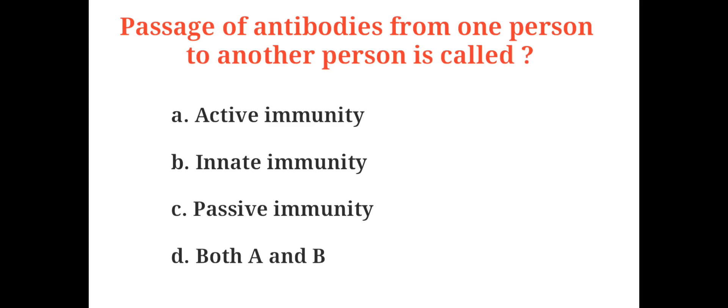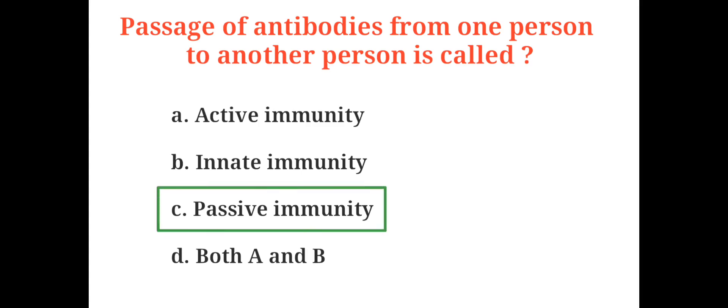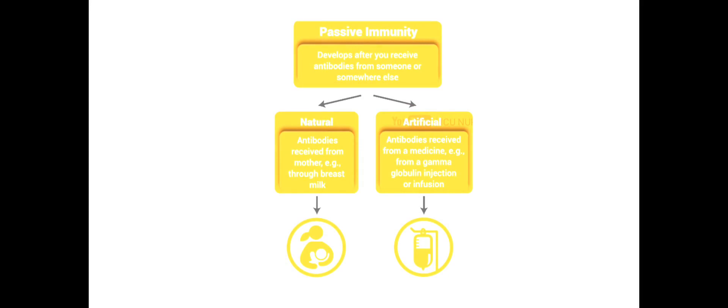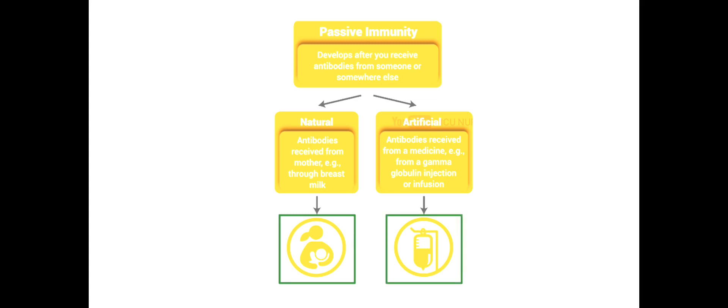Passage of antibodies from one person to another person is called A. Active immunity, B. Innate immunity, C. Passive immunity, D. Both A and B. And the correct answer is C. Passive immunity. Passive immunity is provided when a person is given antibodies to a disease rather than producing them through his or her own immune system. A newborn baby acquires passive immunity from its mother through the placenta. A person can also get passive immunity through antibody-containing blood products such as immunoglobulins. The major advantage to passive immunity is that protection is immediate, whereas active immunity takes time — usually several weeks — to develop. However, passive immunity lasts only for a few weeks or months, and only active immunity is long lasting.